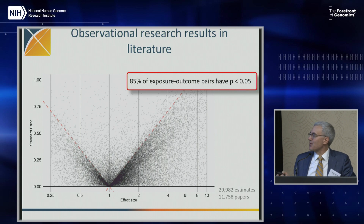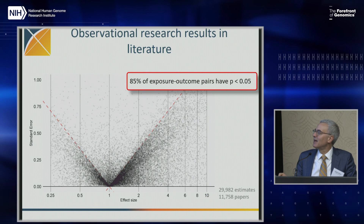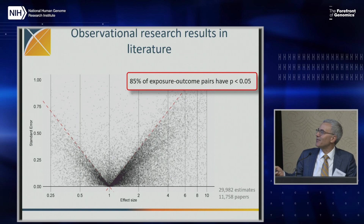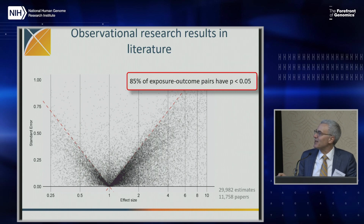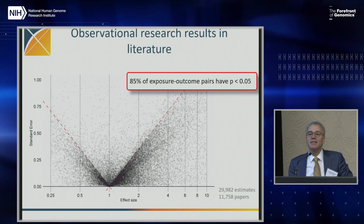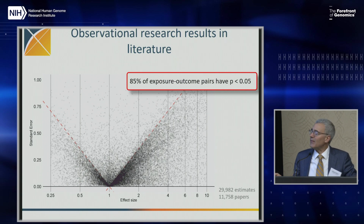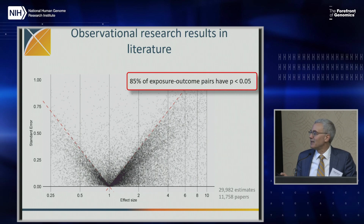We studied the literature — we parsed 30,000 observational research studies and found severe publication bias. This is a graph of effect size by its standard error: not significant, harmful, and protective. What we see is if it's harmful or protective and statistically significant, they publish it — but if it's not statistically significant, they don't bother. We also found evidence of p-hacking on the edges. Basically, if you don't know what this looks like, you don't know the denominator — the literature is essentially a data-dredging scheme.